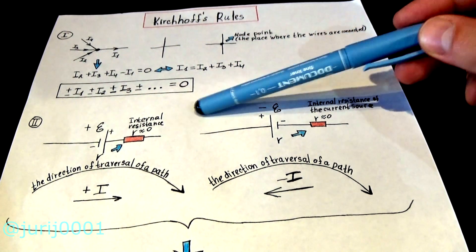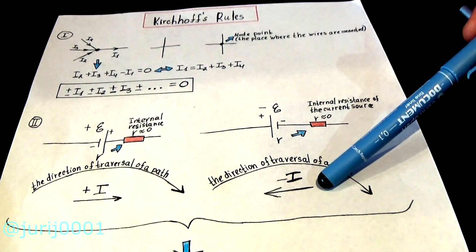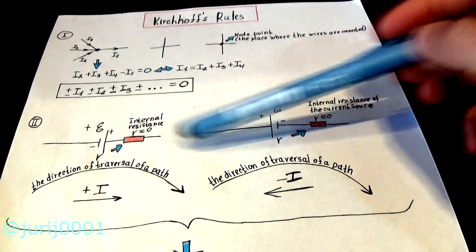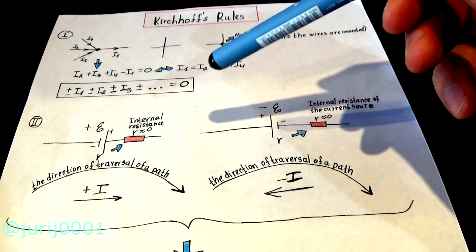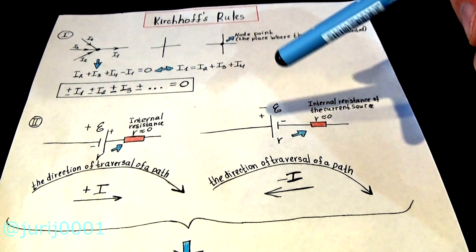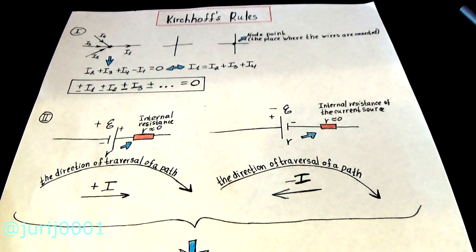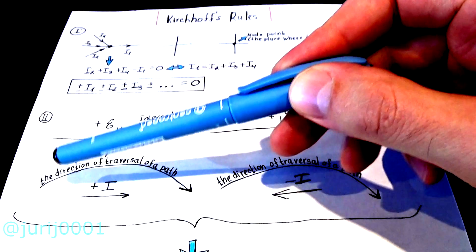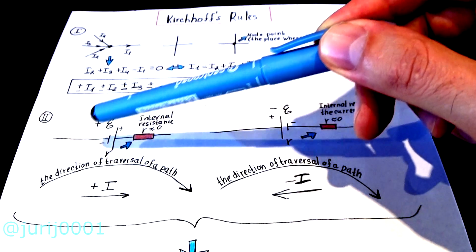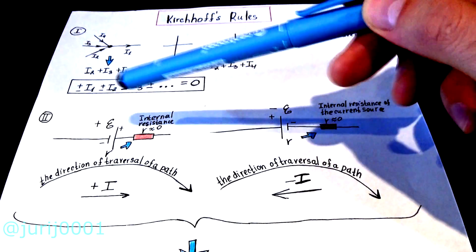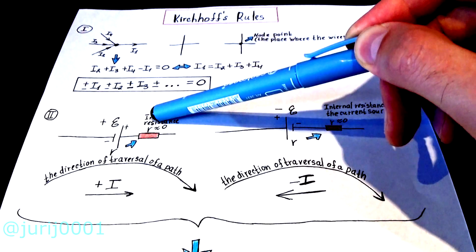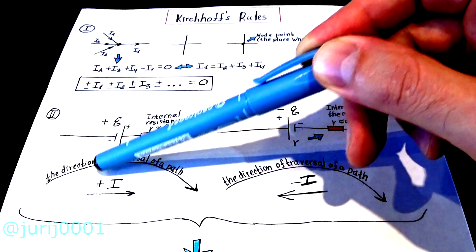To do this I have drawn two driving sources with EMF and internal resistance. The first thing we do is choose the direction of the counter traversal. I choose clockwise, but you can also choose counterclockwise. If you go in the direction of circumventing the contour and encounter a minus then a plus, you put a plus in front of the EMF.